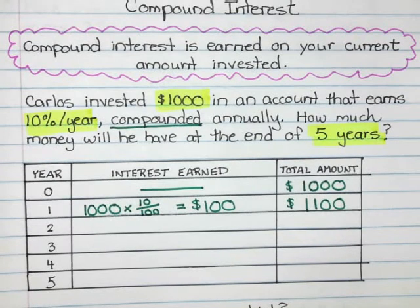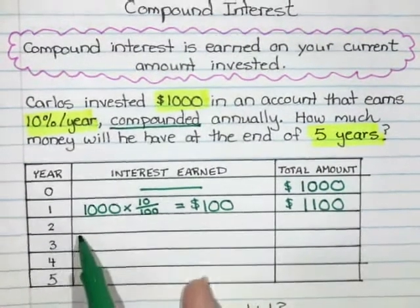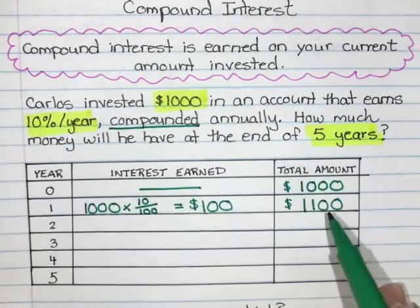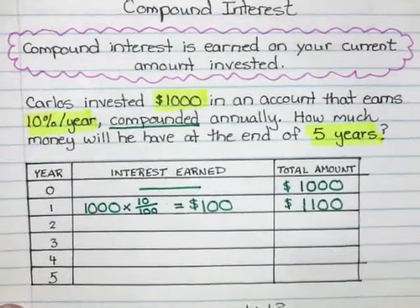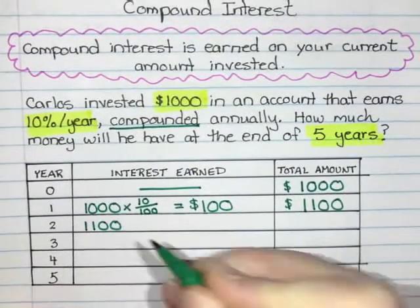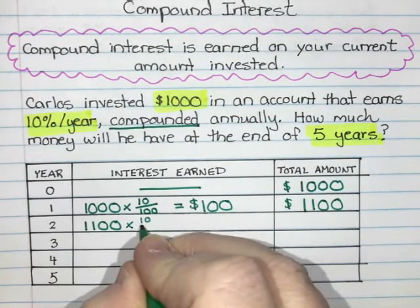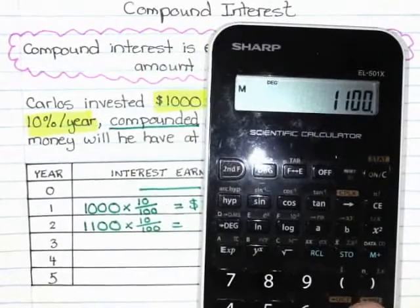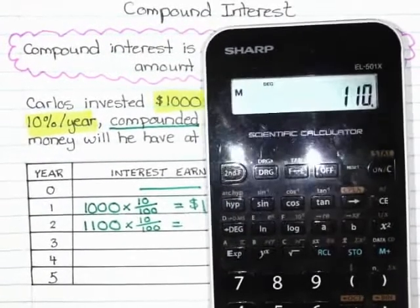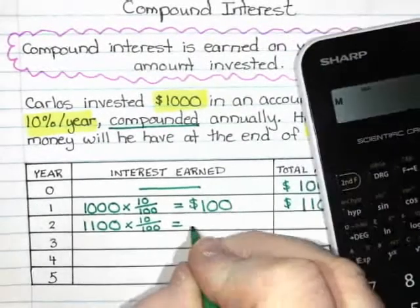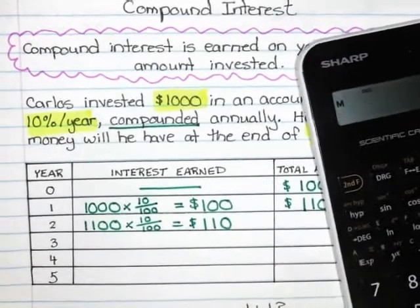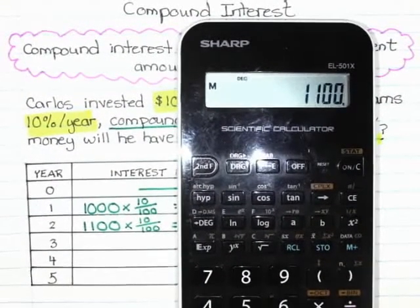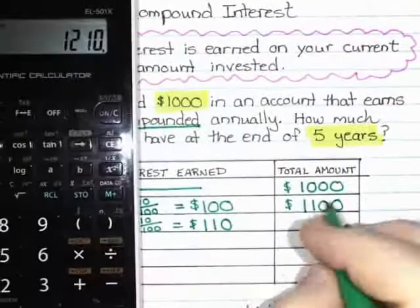This is where compound interest starts to deviate from simple interest. In year two, you're not just earning interest on the initial $1,000 — he's getting interest on his current balance of $1,100. So I calculate: $1,100 times 10 divided by 100. In year two, he doesn't just get $100 — he gets $110 in interest. Adding that to $1,100 gives him $1,210.